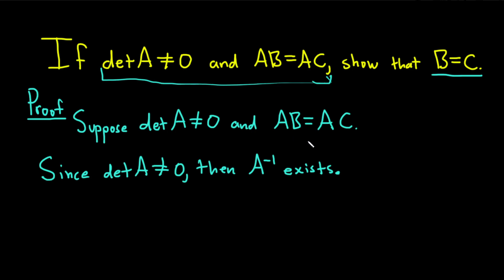And we knew that existed because the determinant was not 0. So we have this to work with. And we're trying to show B is equal to C. And we know that AB is equal to AC. So what we can do now is we can multiply by A inverse on the left on this equation. So I'm going to go ahead and do that.